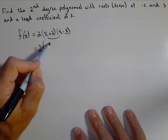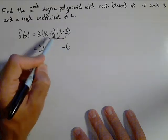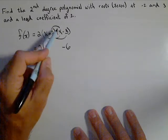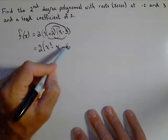So x times x gives us x squared. Two times negative three gives us a negative six, and then on the inside we have a positive two x and a minus three x, so that would leave us with minus x.